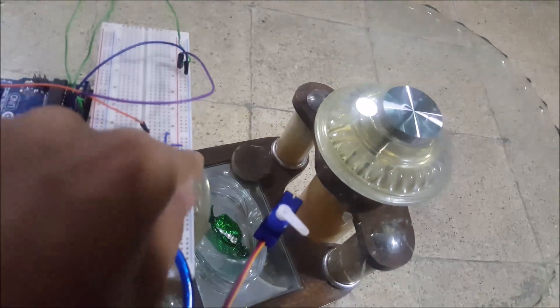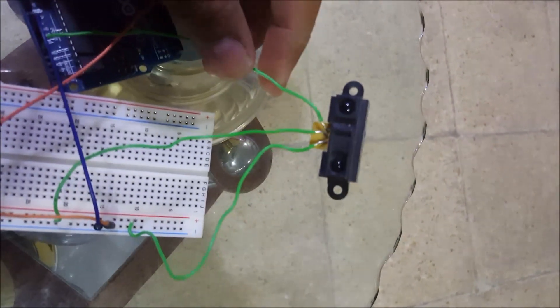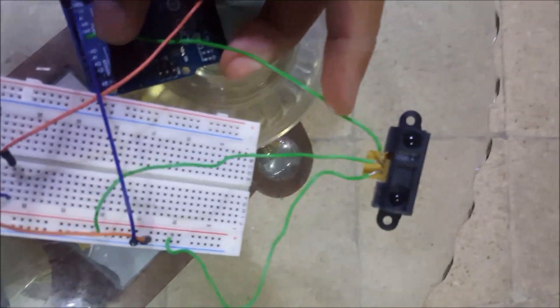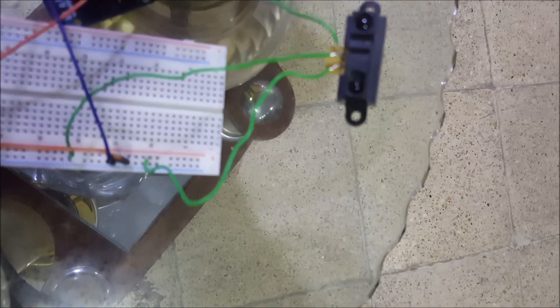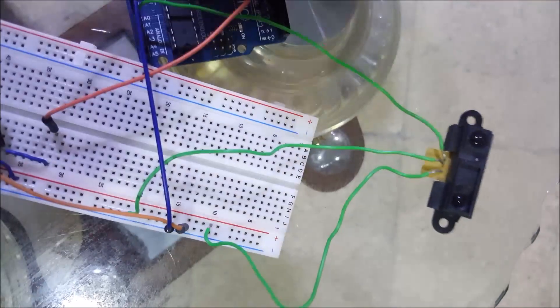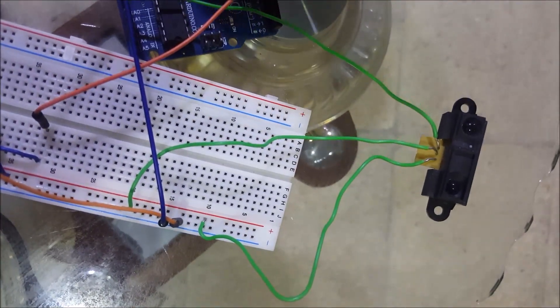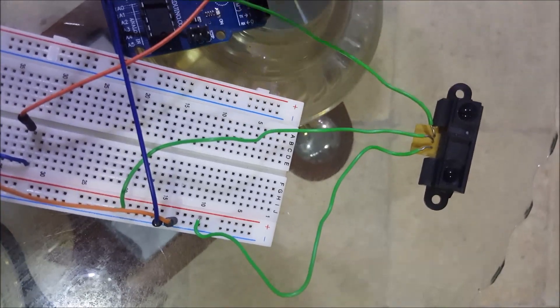Now for the IR sensor, this wire goes to A0, this is the analog inputs. This wire goes to ground and this last one goes to 5 volts. If you use a different type of sensor, just double check the wiring in the data sheet.